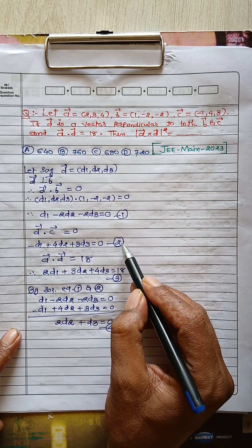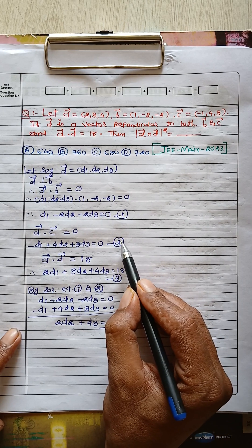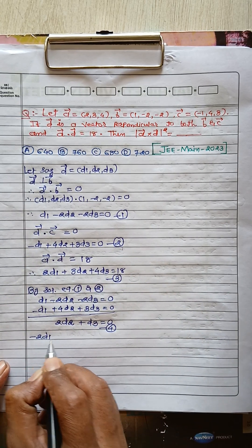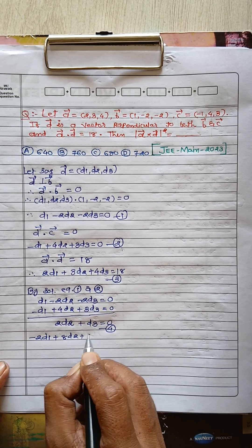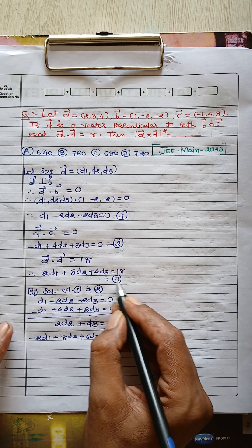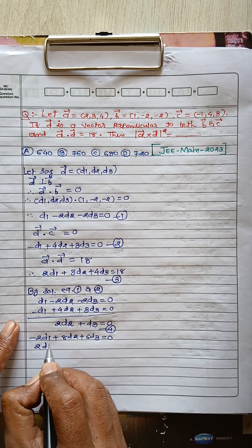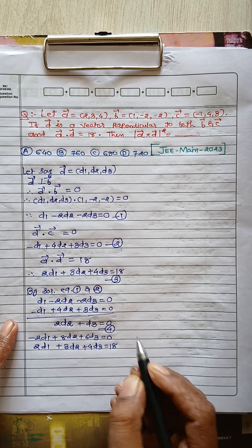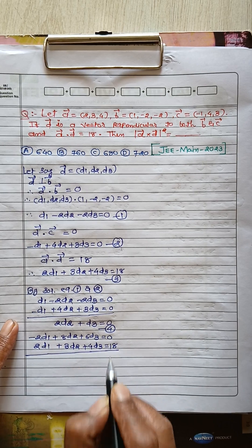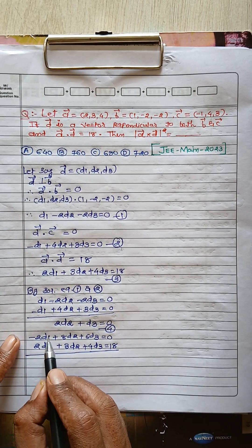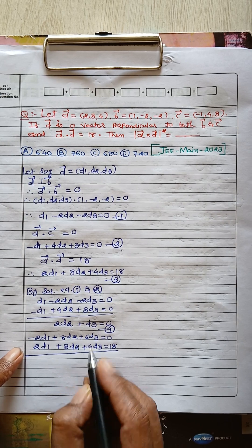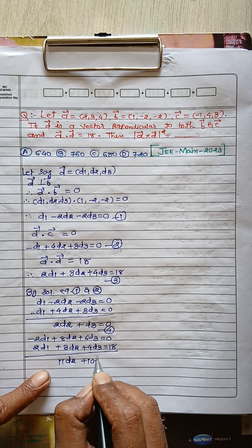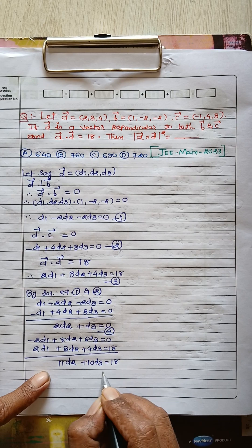To solve Equations 2 and 3, we multiply Equation 2 by 2, giving minus 2d1 plus 8d2 plus 6d3 equals zero. Equation 3 is 2d1 plus 3d2 plus 4d3 equals 18. Adding these two equations, the d1 terms cancel, giving 11d2 plus 10d3 equals 18. This is Equation 5.